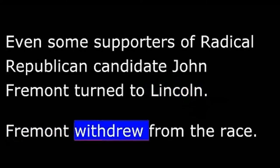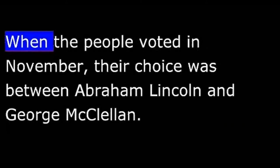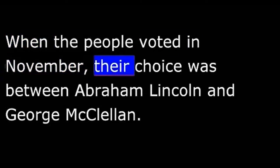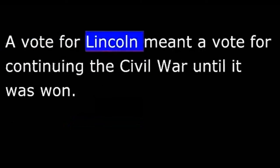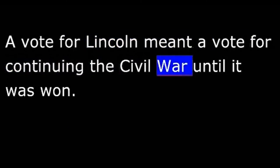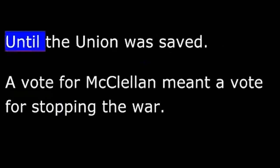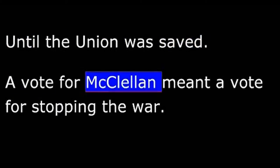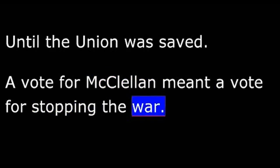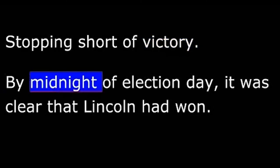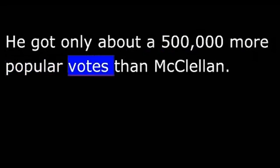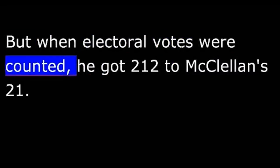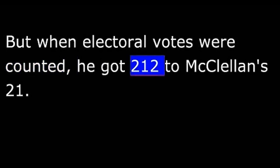Fremont withdrew from the race. When the people voted in November, their choice was between Abraham Lincoln and George McClellan. A vote for Lincoln meant a vote for continuing the Civil War until it was won and the Union was saved. By midnight of election day, it was clear that Lincoln had won. He got only about half a million more popular votes than McClellan, but when electoral votes were counted, he got 212 to McClellan's 21.